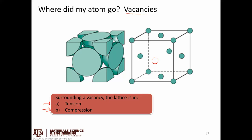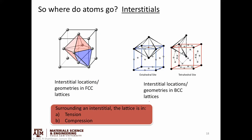If we have a vacancy, the missing atom causes the other atoms to get drawn in, so the system is locally in tension. One way to think about it: the atoms are being pulled into that vacant spot, and the bonds between neighboring atoms are being stretched. Similarly, when we have an interstitial atom, the local region around it is in compression — this atom is occupying some volume where there's usually nothing, so it pushes the surrounding atoms outward, and that is a compressive force.